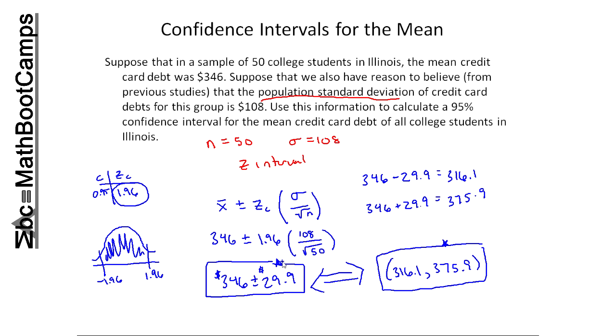Remember what you're saying with these is you're saying you're 95% confident that the true mean credit card debt for all college students in Illinois is somewhere between these two values, between $316 and $376. So you're no longer talking about the sample, you're talking about the population. And there's a lot of other things to consider when interpreting these. I'm focusing on the calculations here, but the interpretation is very important. So let's look at another one.